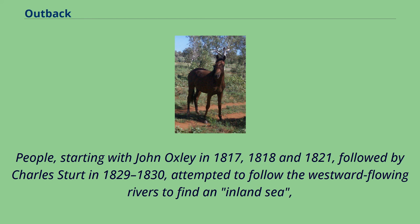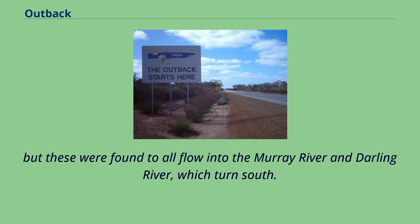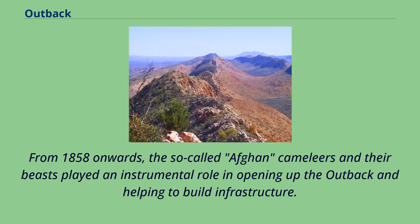Charles Sturt followed in 1829–1830, also attempting to follow westward flowing rivers to find an inland sea. But these were found to all flow into the Murray River and Darling River, which turned south. From 1858 onwards, the so-called Afghan Cameliers and their beasts played an instrumental role in opening up the outback and helping to build infrastructure.